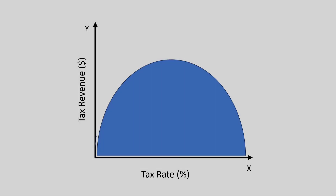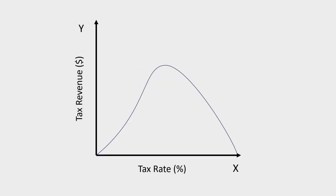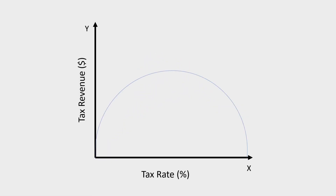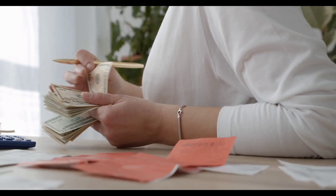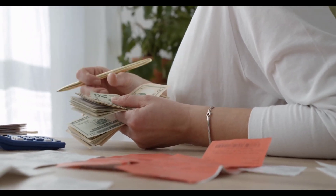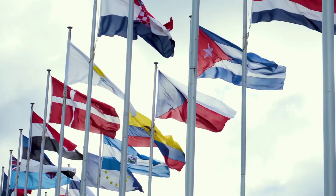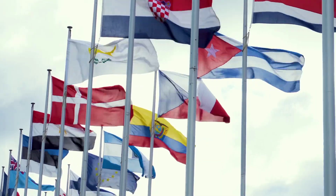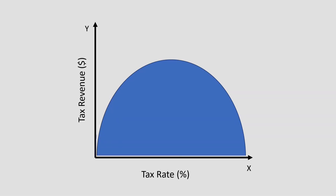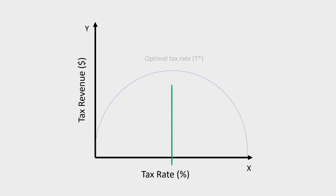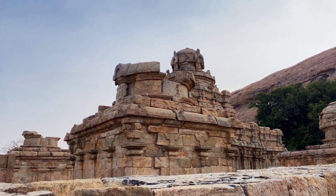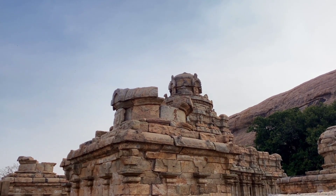Regardless of its flaws and disagreement on its exact shape, and what the actual optimal tax rate is, it is still an interesting and yet basic idea on how tax rates end up influencing behavior and government revenue. With that being said, what do you think about the Laffer curve? Does the idea of an optimal tax rate make sense to you? Feel free to share your thoughts, and thank you for watching.